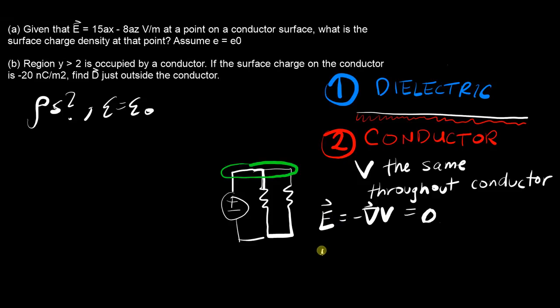That means a bunch of other stuff—the flux density in there would be zero, the charge density in there would be zero. All these properties happen to be true for the conductor side of a conductor-dielectric boundary, and these are going to be important to solving this problem properly.